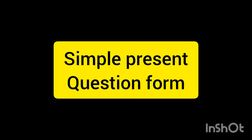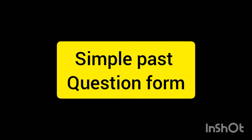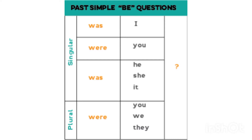Simple present question form — صيغة الأسئلة في الحاضر: Am I? Are you? Is he? Is she? Is it? Are we? Are they? إذن باش ترحو السؤال، كنديرو subject inversion — يعني كنسابقو لverb على لsubject. Simple past question form — الماضي صيغة السؤال: Was I? Were you? Was he? Was she? Was it? Were we? Were they?